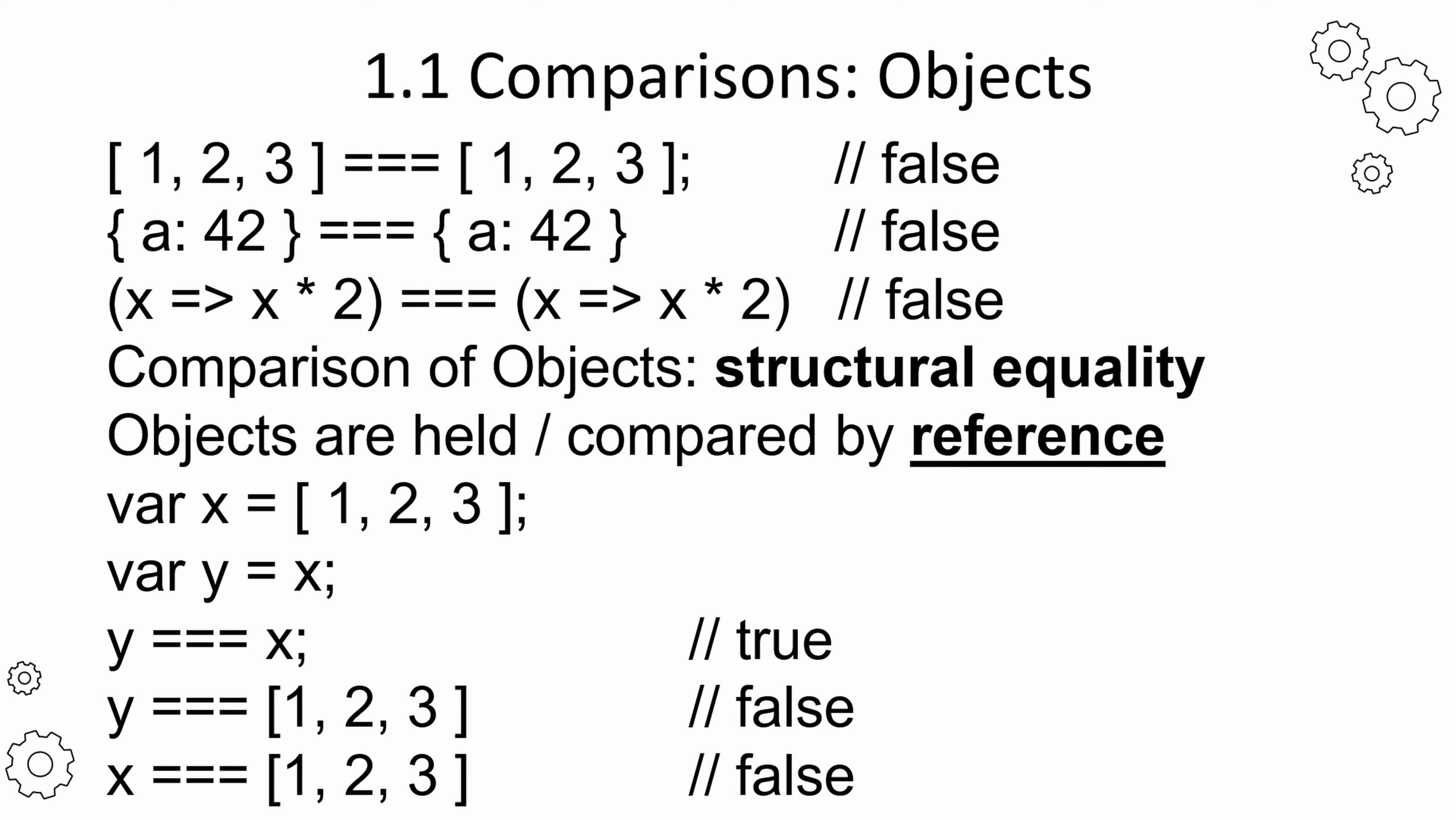Here is an example. We assign an object to the variable x. We assign x to y. Now y is also pointing at the same reference of our object. That's why you get true for the comparison.